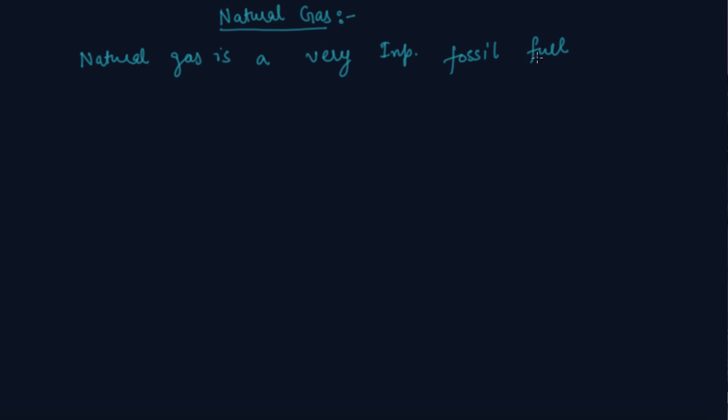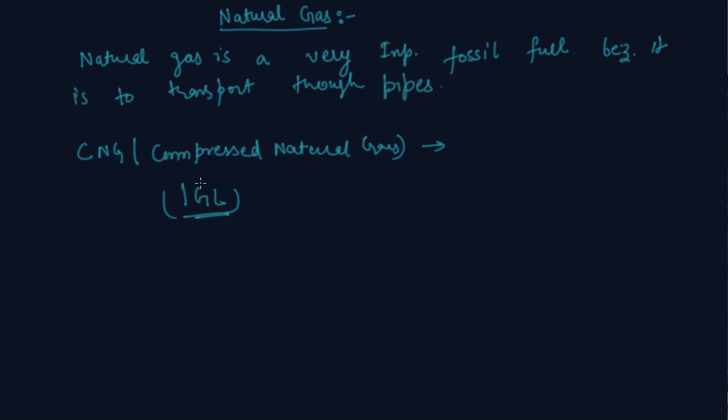It is easy to transport through pipes. You might have seen CNG - this is compressed natural gas - transferred through pipes. I hope you have heard the name of IGL, Indraprastha Gas Limited. All the gas for this company is transferred through pipes. This gas is called CNG.